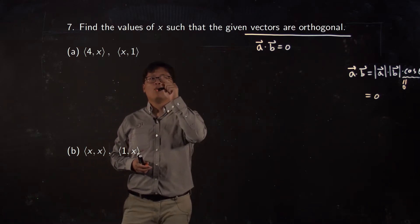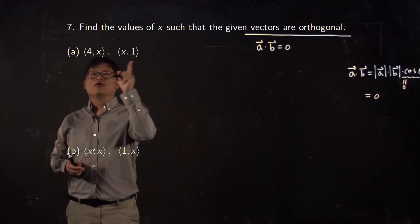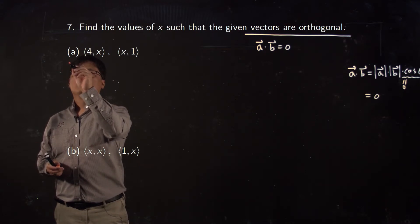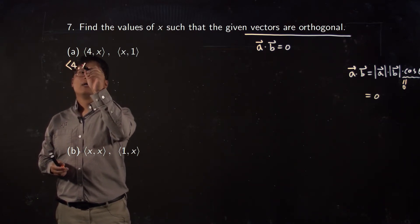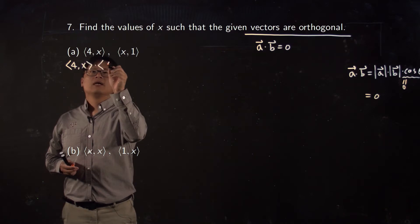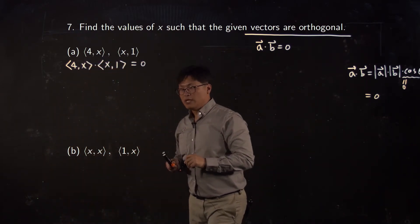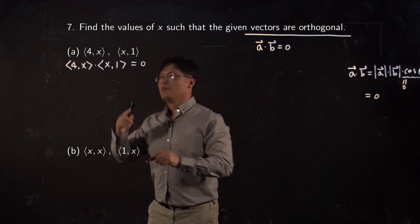So for this problem, vector a, let's say (4, x) is a, and (x, 1) is b. Then since it must be orthogonal, we can do (4, x) dot (x, 1) must be equal to zero. This dot product is really easy, right? Like product of x components